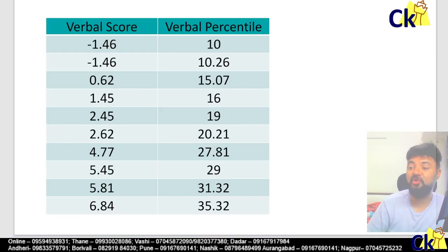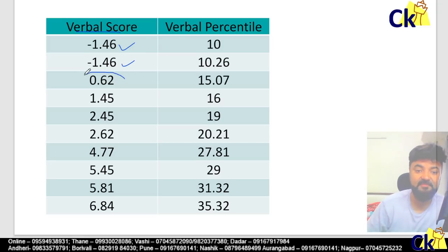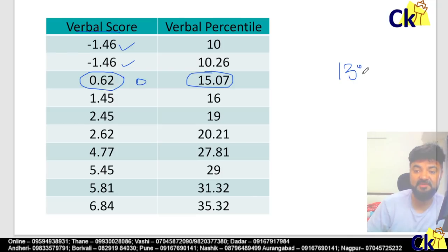Why am I making this video? Because a lot of people think if they leave the paper blank it will be negative. For verbal: minus 1.46 is at 10 percentile, and 0.62 is 15 percentile. So if I leave the paper blank — zero marks — I will score probably around 13 to 14 percentile, between 10 and 15.